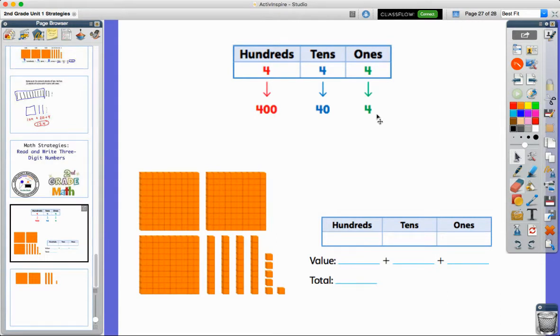So let's look at the base 10 blocks down here. Again, remember that the big squares represent groups of 100. So we have 100, 200, 300. So I'm going to fill in my place value chart with three groups of 100.